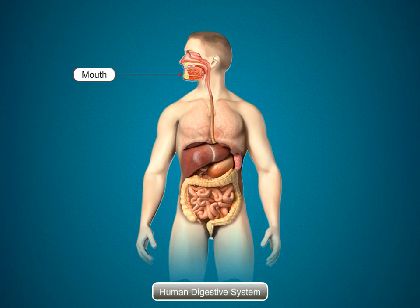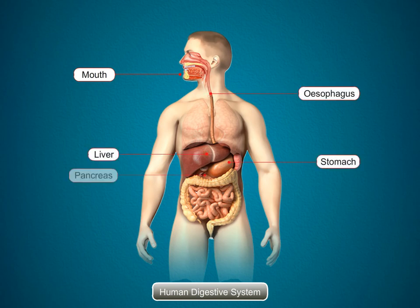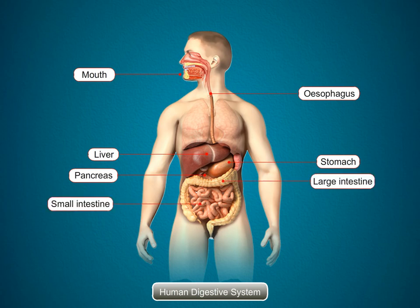Human digestive system: Mouth, esophagus, liver, stomach, pancreas, large intestine, small intestine, appendix, anus.